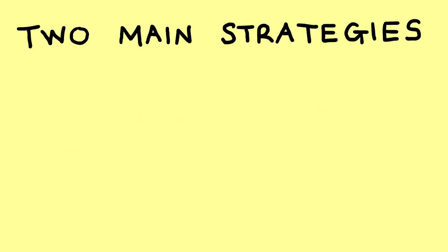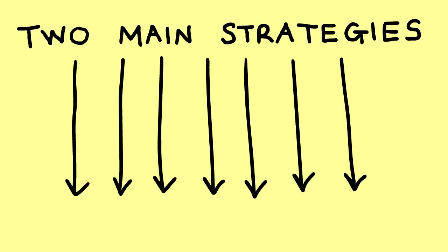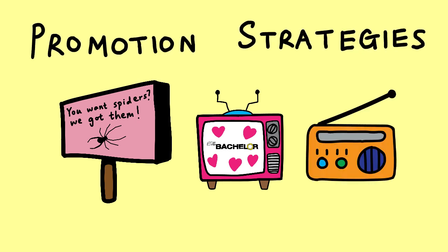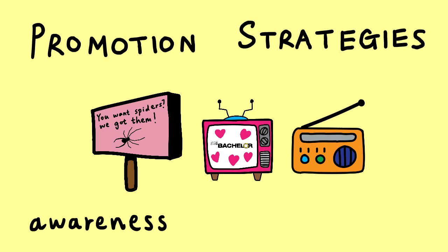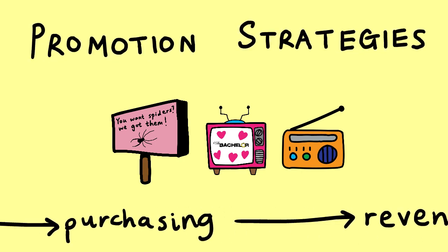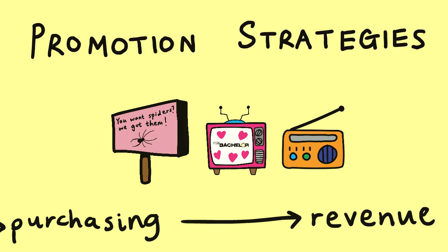There are two main strategies which businesses use to achieve the objective to make a profit. The first is implementing promotion strategies, such as advertising on billboards, TV and radio. This serves to generate awareness for a business's brand, which can lead to greater purchasing of a business's product. And so, greater amounts of revenue can be generated relative to expenses in a given period of time.